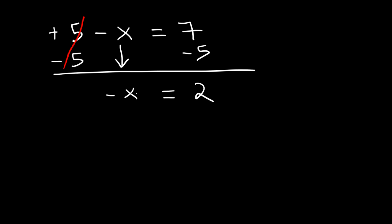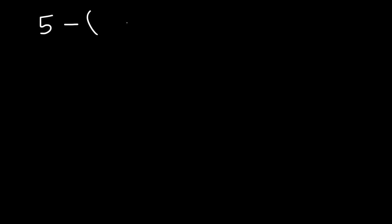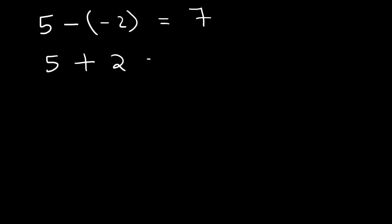When you get into a situation like this, you need to multiply both sides by a negative sign. Two negatives will turn into a positive, so on the left we have positive x, and on the right we have negative 2. So x is equal to negative 2. We can check: 5 minus negative 2 gives two negative signs, and a negative times a negative is a positive, so this becomes 5 plus 2, which is indeed 7.